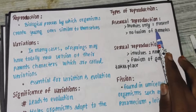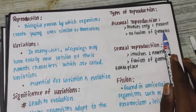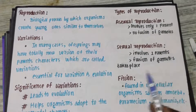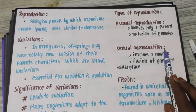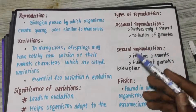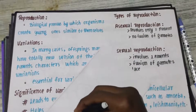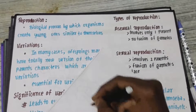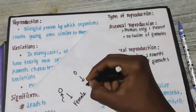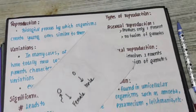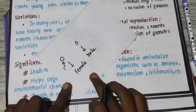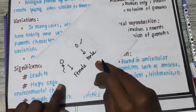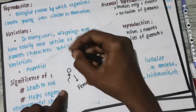For example, in the case of a honeybee: if the egg develops without sperm, it will develop as a male. If it is fertilized by sperm, it will become female. This is called parthenogenesis — where gametes may be involved but there is no fusion between two gametes.